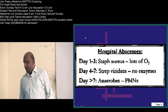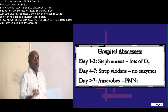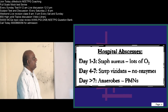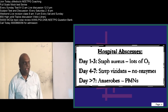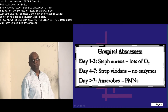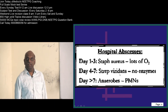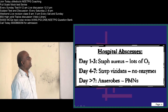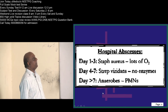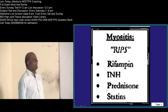Another examiner favorite: hospital abscesses. Day 1–3: the common cause is Staph. Day 4–7: Streptococcus viridans. After day 7: if you find a hospital abscess, it is commonly anaerobes — that is what you must remember.